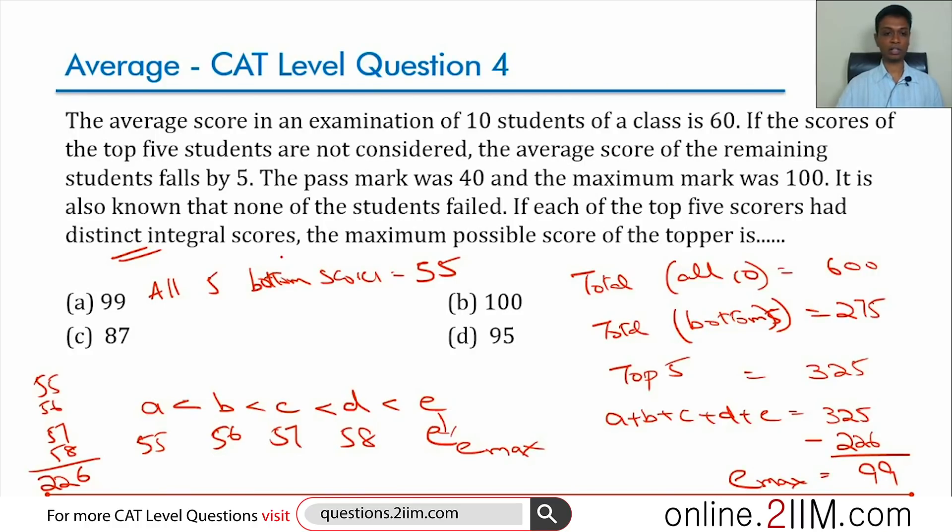The maximum value possible for e is 99. And that scenario would be achieved when the scores are 55, 55, 55, 55, 55 for the bottom 5, and 55, 56, 57, 58, and then 99 for the top 5.